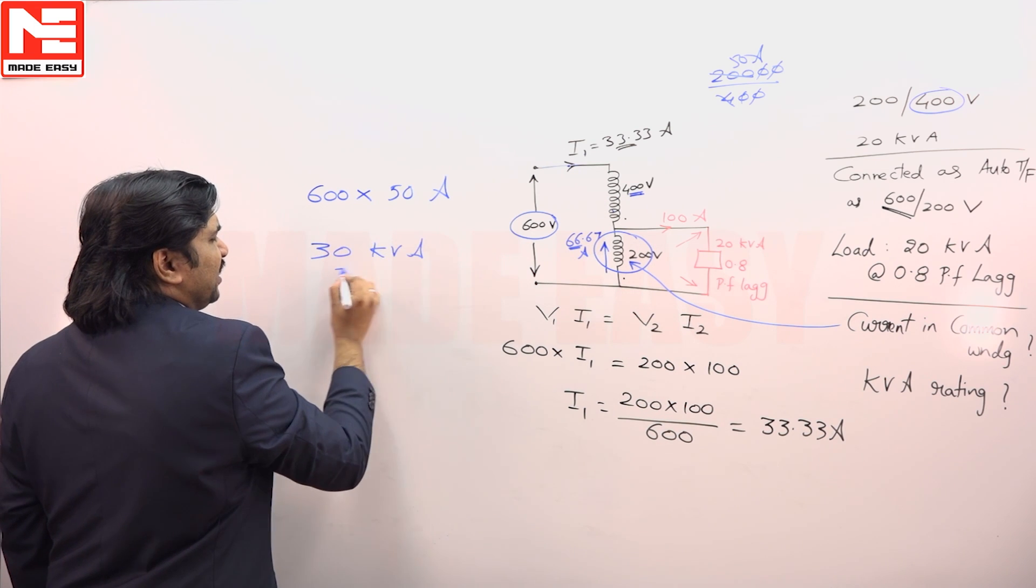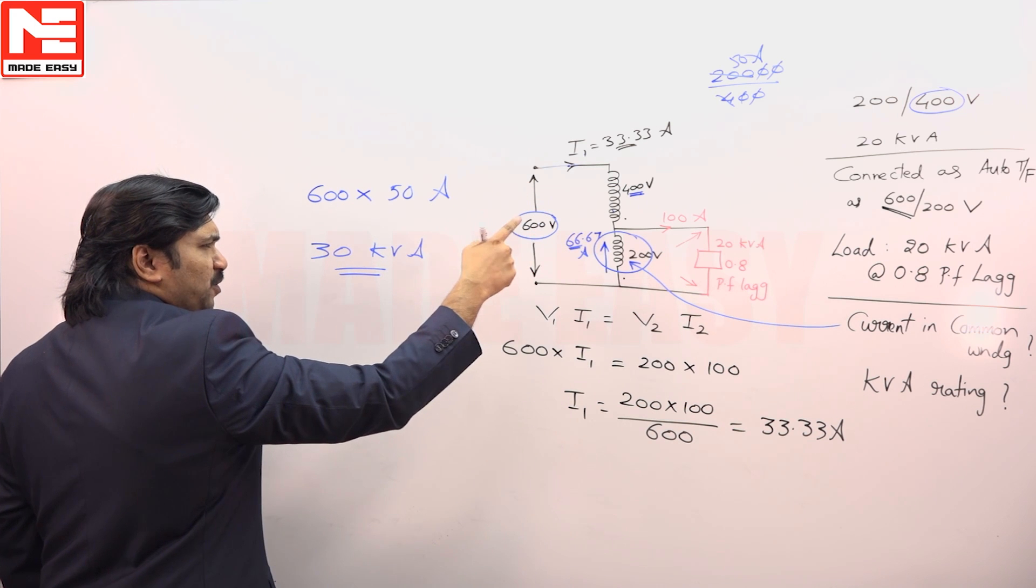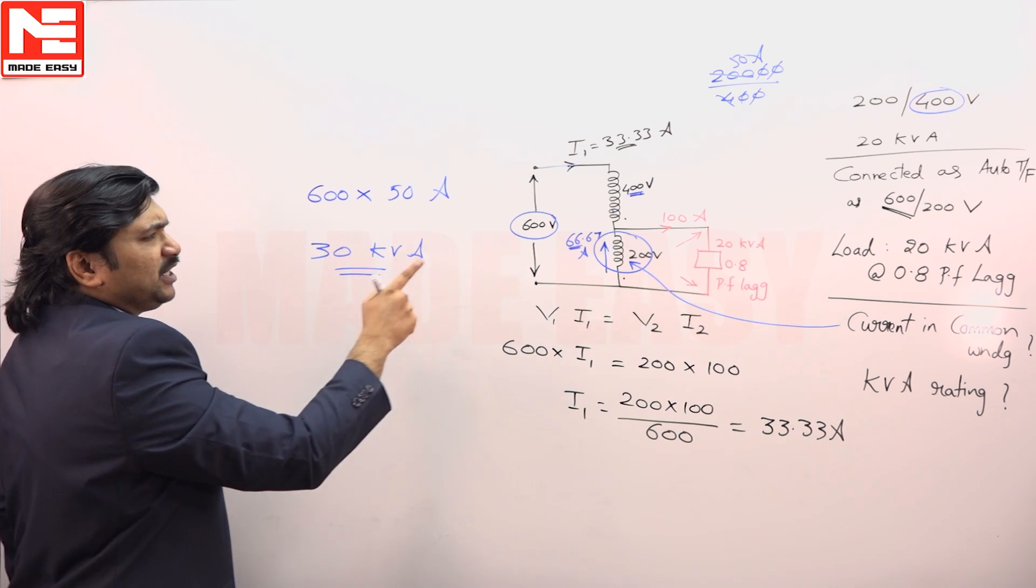So when a two-winding transformer is reconnected as an auto transformer, the auto transformer rating will be 30 kVA for this particular mode.